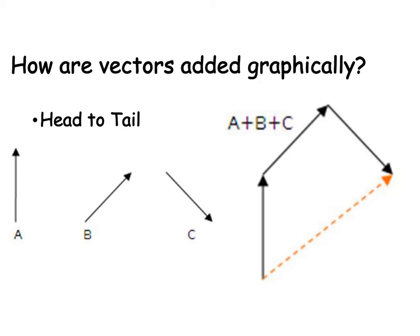Alright, so graphically, vectors are added head to toe. So if you had these two right here and you wanted to add them up, here's your first one, B, and then you would put your second one on like this. So you want them head to tail.